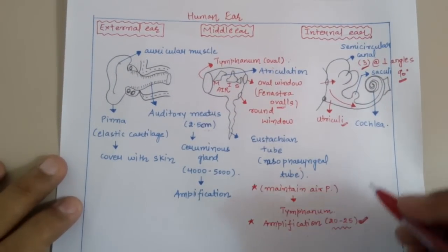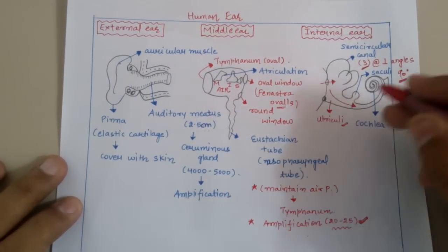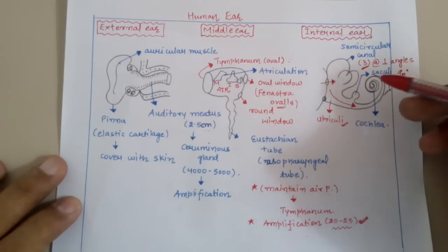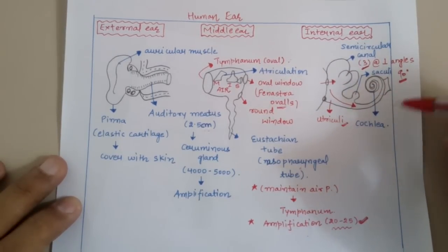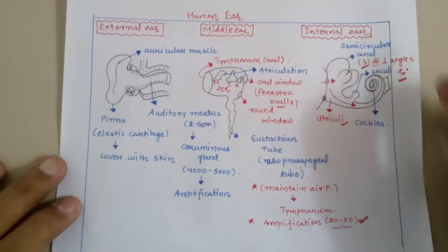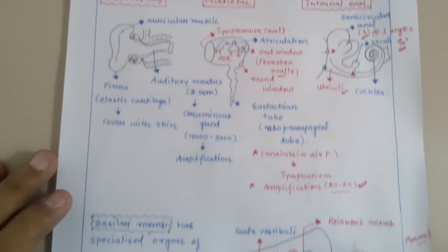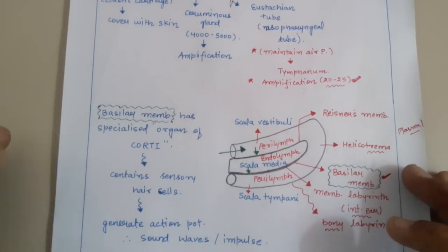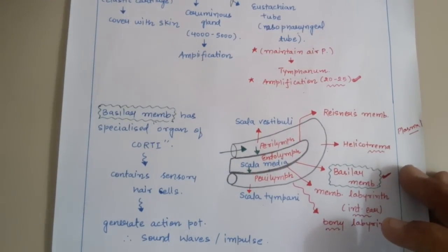If we take the transverse section of the cochlea, which is the coiled part of the human ear, what kind of structure will we observe? Let's look at this particular structure.